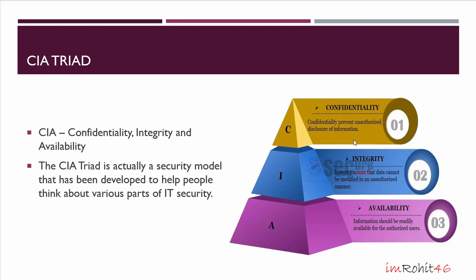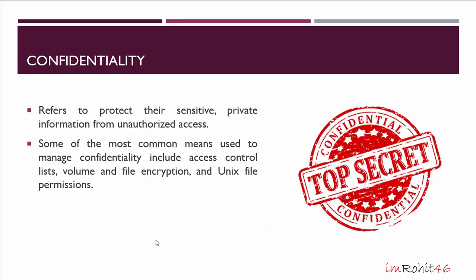Let's now look at the C in the CIA triad — confidentiality. Confidentiality ensures that data or an information system is accessed by only an authorized person. User IDs and passwords, biometrics, access control lists, and policy-based security are some of the methods through which confidentiality is achieved.